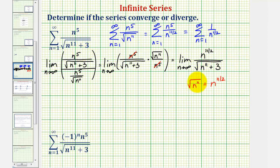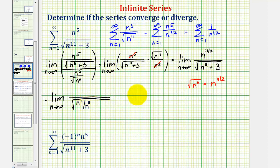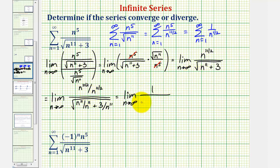If we want to show full work, we divide everything by the highest power of n in the denominator, which is n to the eleventh under the square root. So we write the limit as n approaches infinity, where in the denominator we have the square root of n to the eleventh plus three divided by n to the eleventh, and for the numerator we divide n to the eleven-halves by n to the eleven-halves, giving one. This simplifies to one divided by the square root of one plus three divided by n to the eleventh. As n approaches infinity, three over n to the eleventh approaches zero, so this limit equals one. Because this is positive and finite and we compared to a diverging series, the given series also diverges.